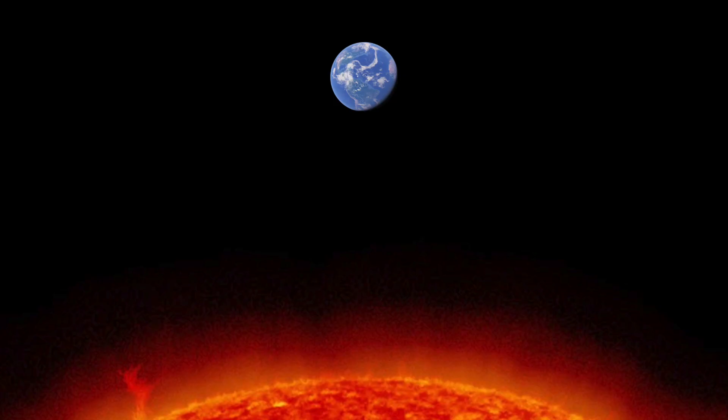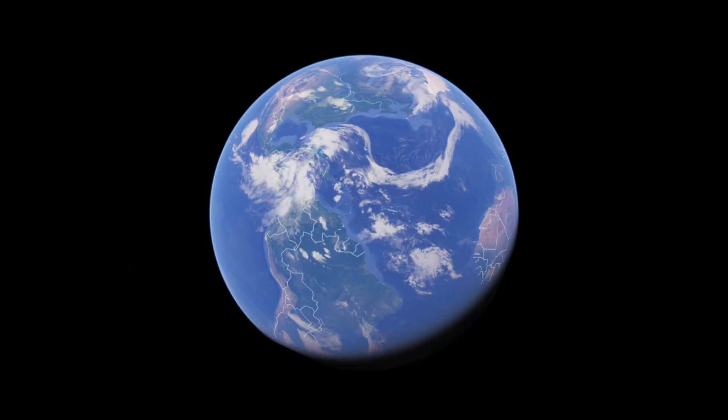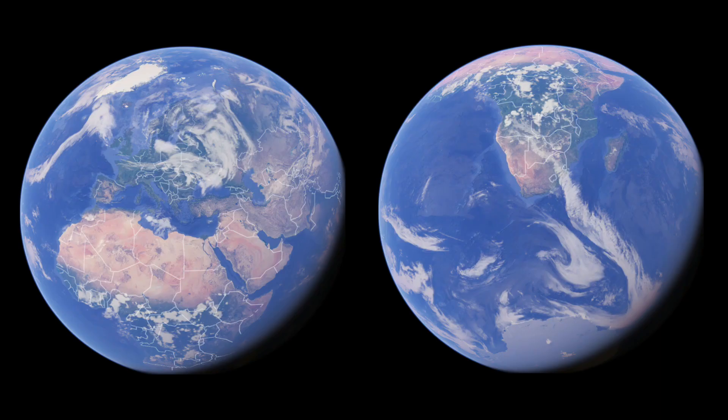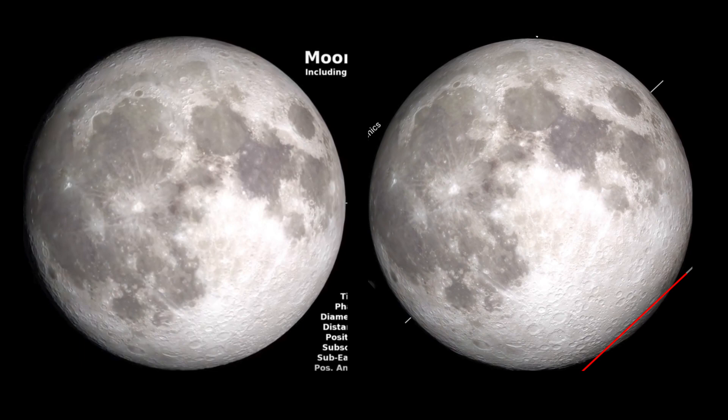Imagine you were on the sun and you watched the Earth over the course of a year. Because of the 23.5 degree tilt of the Earth's axis, you would mostly see the northern hemisphere during the summer months and the southern hemisphere during the winter months. Latitudinal libration is the same thing.